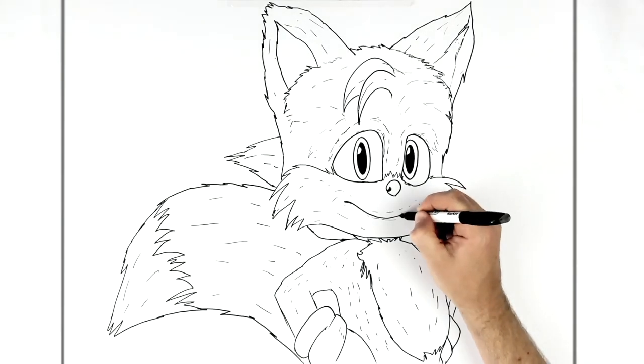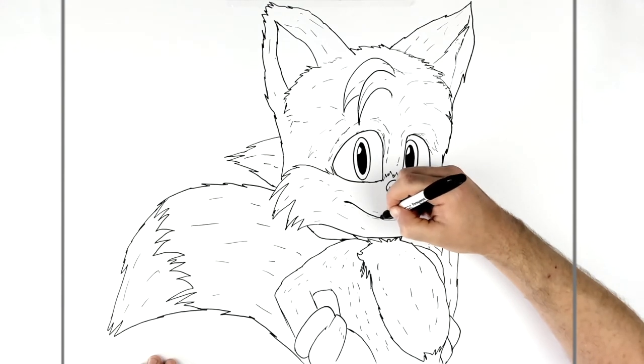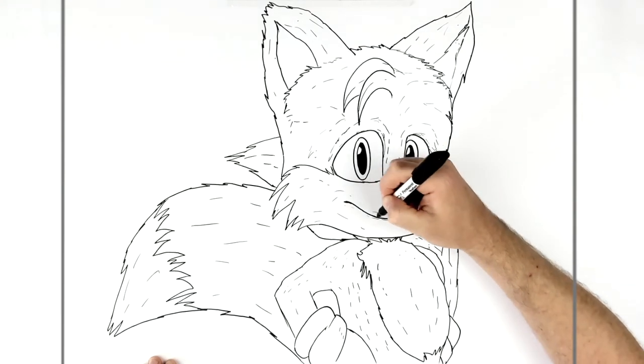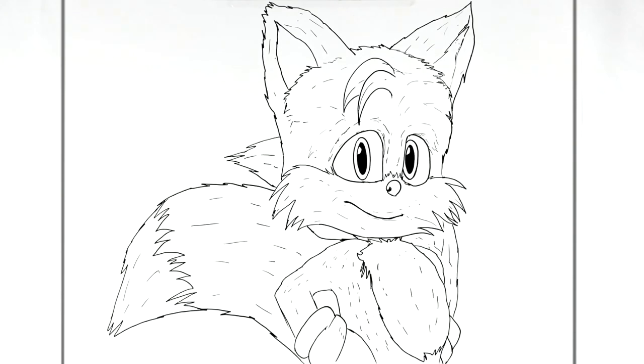What I think, that's everything. Just darkening up his sort of mouth smile here. That's it, that's how to draw Tails from Sonic the Hedgehog 2. Hope it's helpful, thanks for watching, see you in the next one.